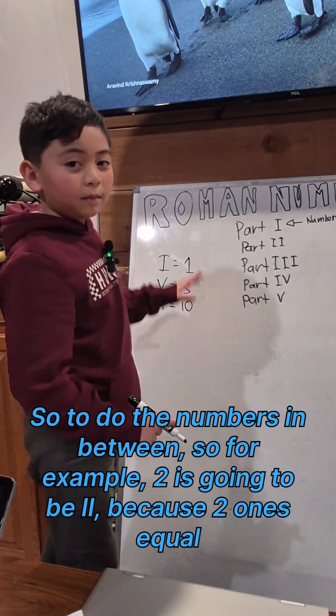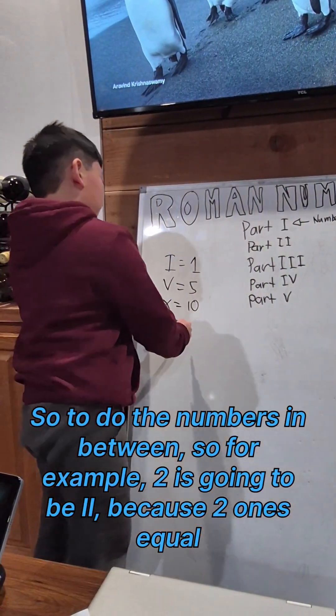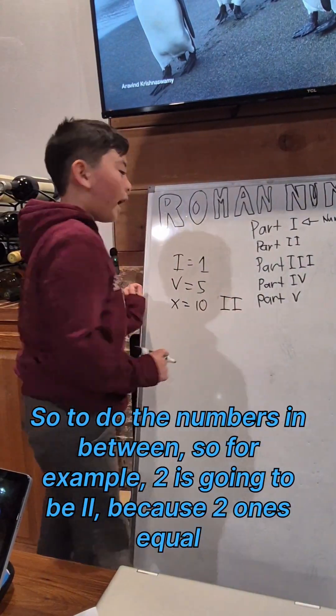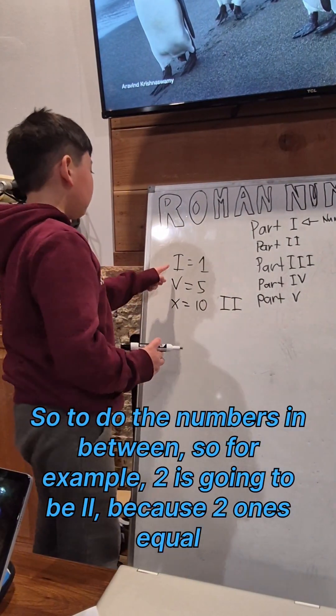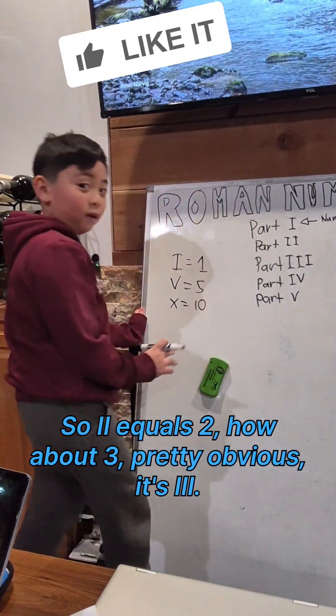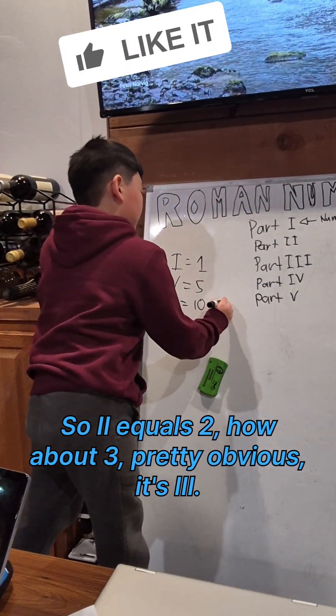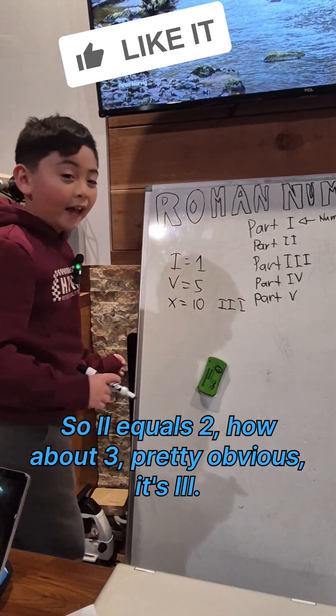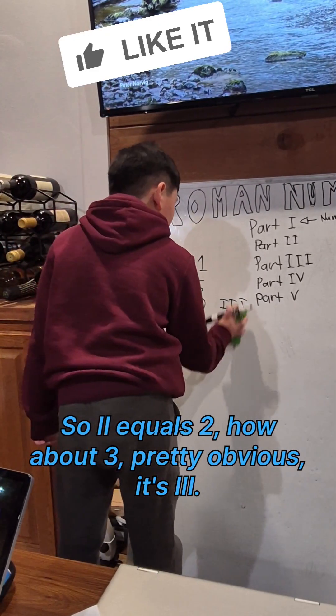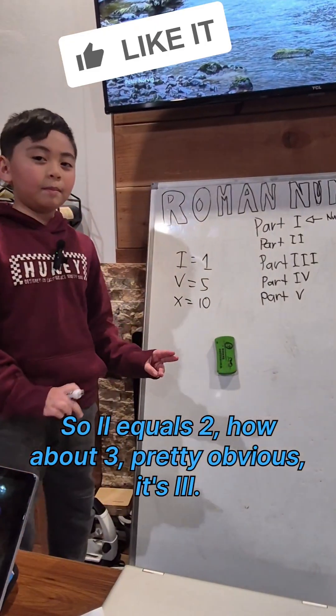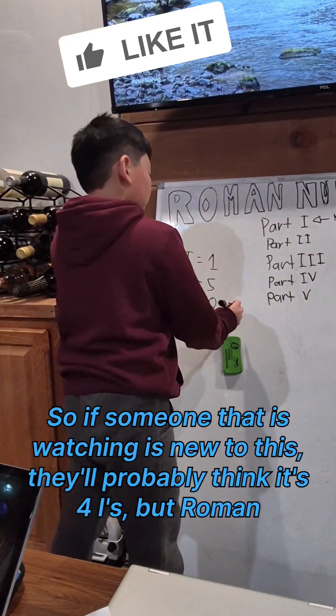To do the numbers in between, for example, 2 is going to be II because two 1s equal 2. How about 3? Pretty obvious, it's III. But how about 4?